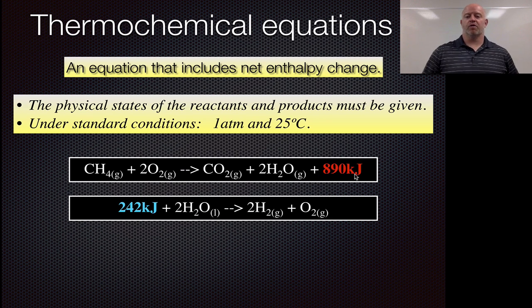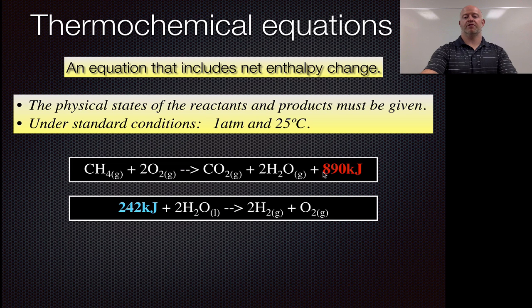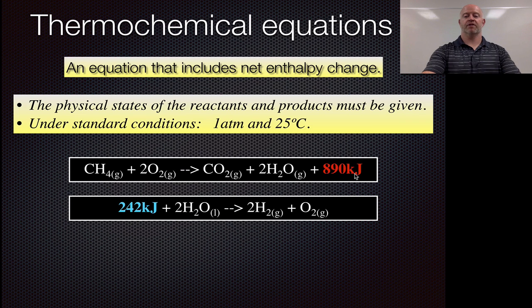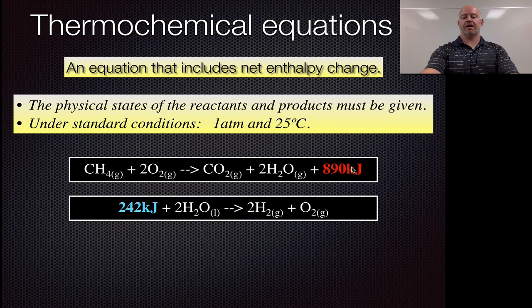Now previously in our different units, what we would do is say plus, and we'd use that delta symbol right here, or that big triangle, and we wouldn't say how much energy was being released or absorbed. So in this case, we're actually showing that we're releasing 890 kilojoules of energy. So we're seeing that this is an exothermic process, and we write that on the right-hand side being exothermic.